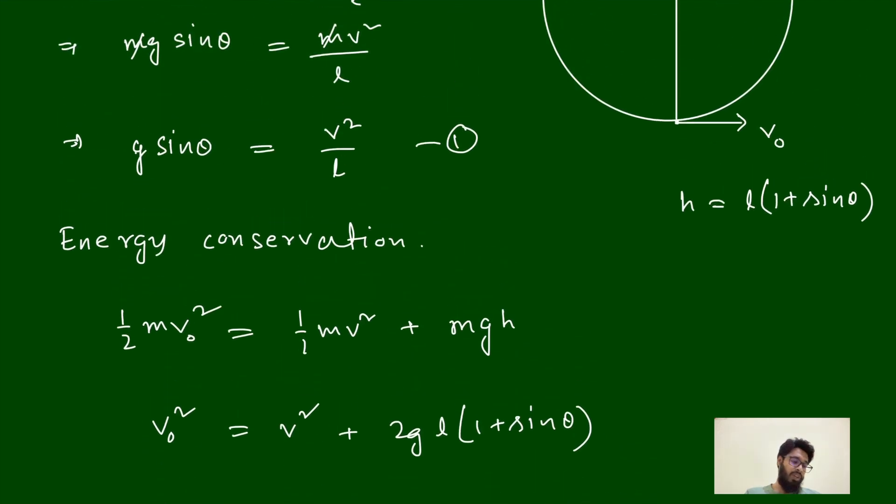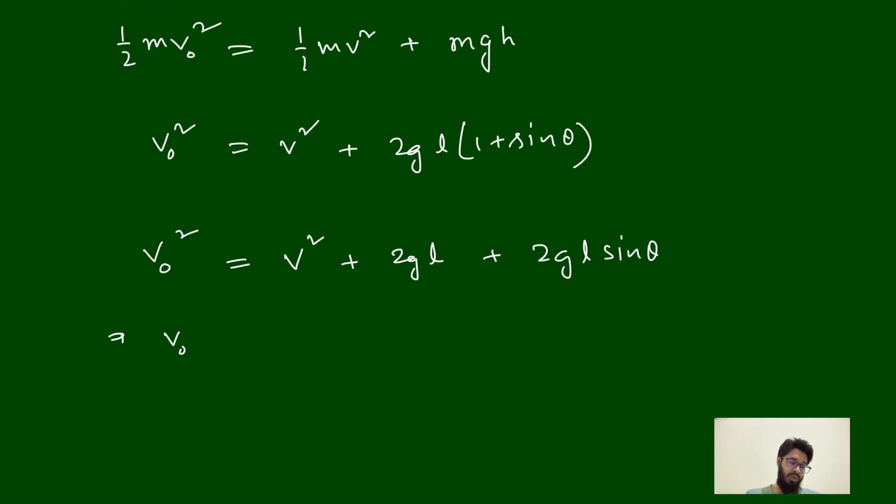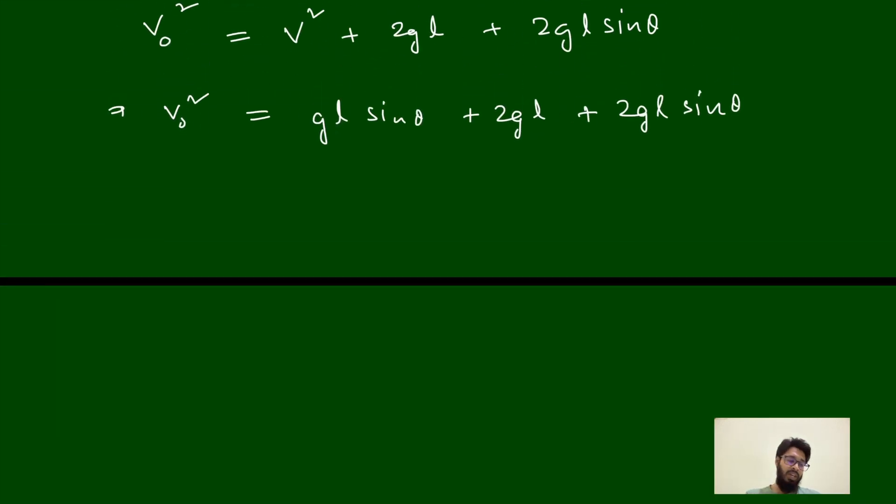One more thing we will know: here you can say v square equal to gL sin theta. Just put here again. We can say v0 square is equal to v square. In place of v square I can write gL sin theta plus 2gL plus 2gL sin theta.